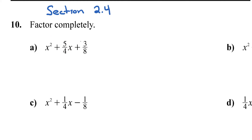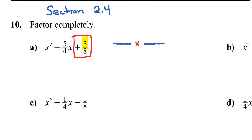Let's focus our attention on the last number here, which is positive 3 over 8. We need two numbers that multiply to 3/8, so since we're dealing with a fraction we need two fractions that multiply to 3/8. I have a 3 on the numerator, so the only combination where I have two numbers that multiply to 3 is going to be 1 and 3.